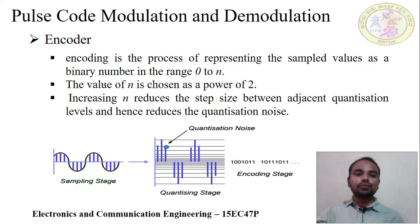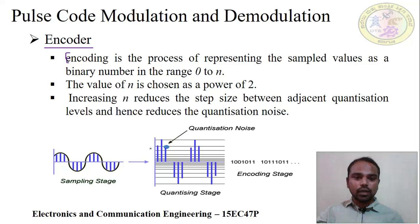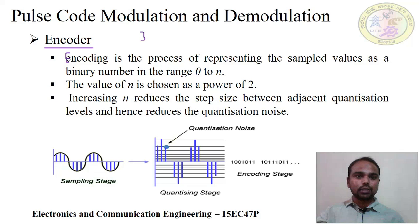Now we come to the very important step, that is encoding. The encoder represents the quantized values using N bits. For example, if we choose 3 bits, N equals 3. Encoding is a process of representing the sampled values as binary numbers from the range of 0 to N bits — that means from 000 to 111 when N equals 3. Each quantization value is represented by a binary code. This is called the encoder.